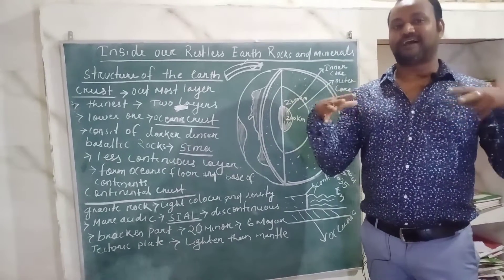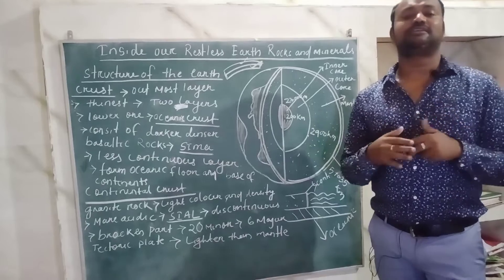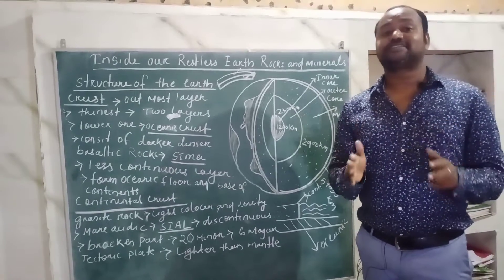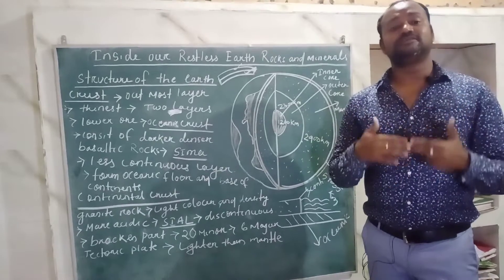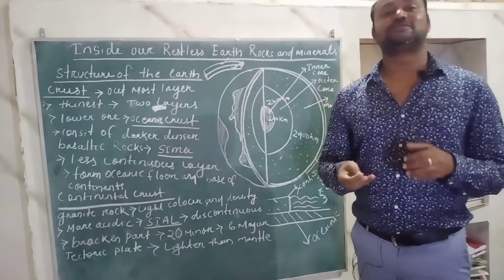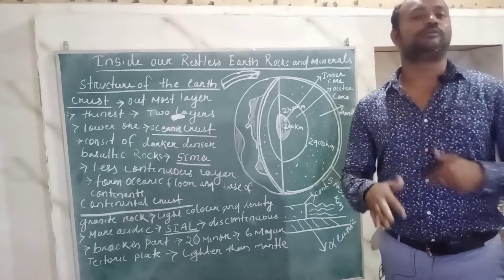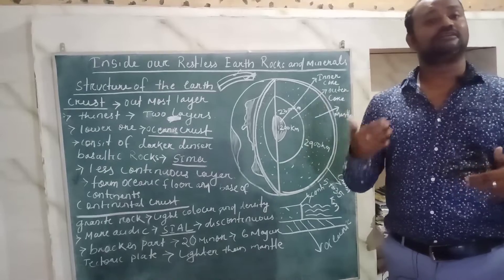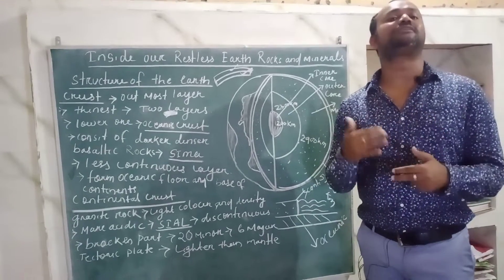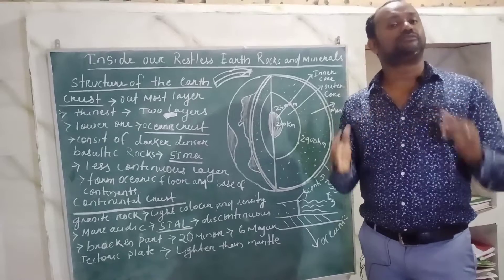The continental crust is a broken part — just like our skull, which is attached with pieces of bone. The continental crust is not continuous at all. It has small plates — 26 plates in total, of which 6 are major tectonic plates and 20 are minor tectonic plates. These tectonic plates are floating over the oceanic crust and the asthenosphere, because the crust is lighter than the mantle.